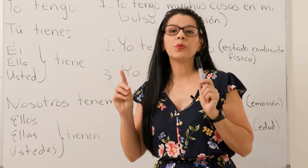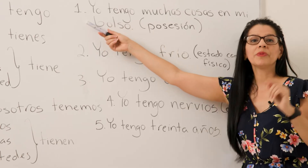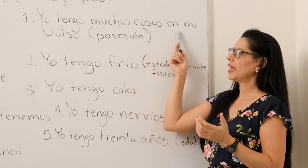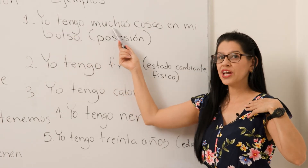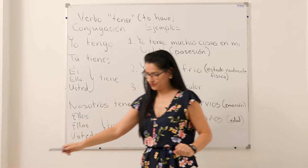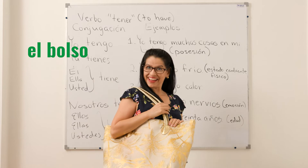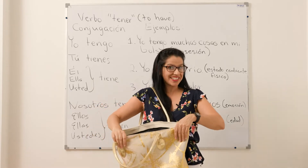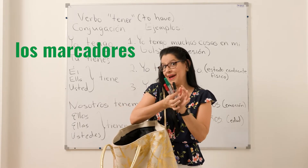Ahora, vamos a poner atención a algunos ejemplos con el verbo tener. Número uno: Yo tengo muchas cosas en mi bolso. Repita. Yo tengo muchas cosas en mi bolso. Por ejemplo, ese bolso es grande para ir a la playa, y yo tengo muchas cosas aquí. En mi bolso, yo tengo marcadores.